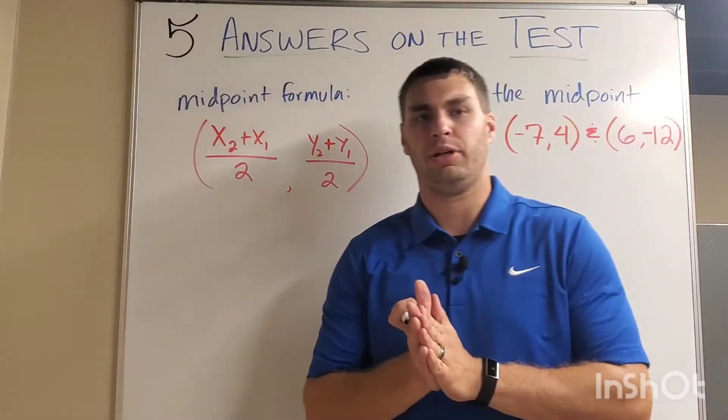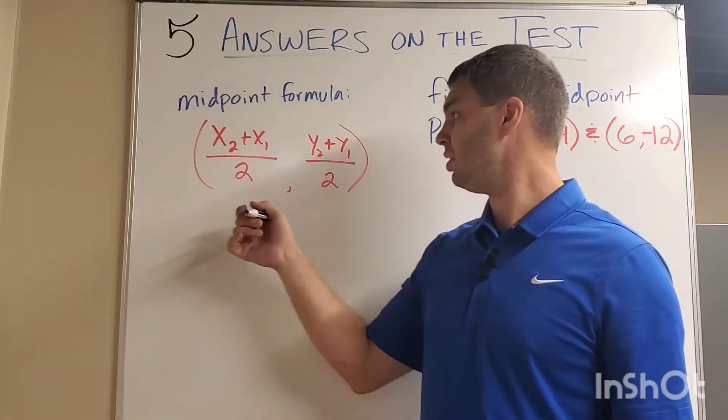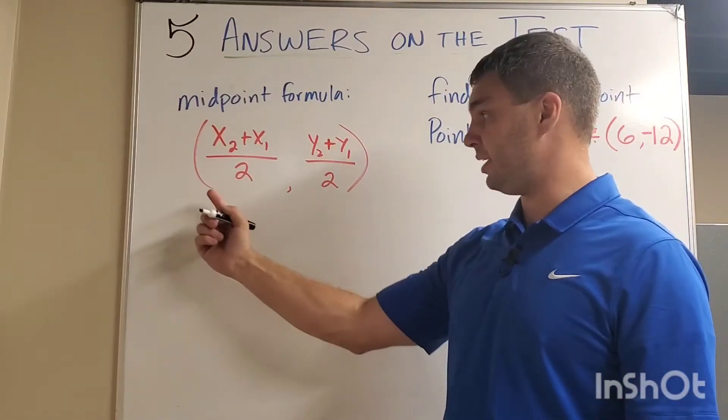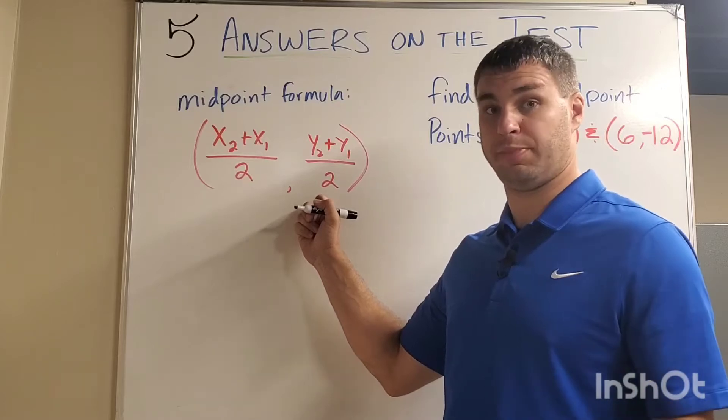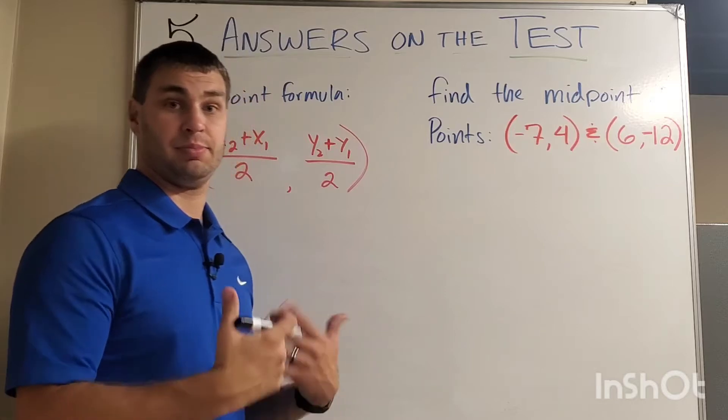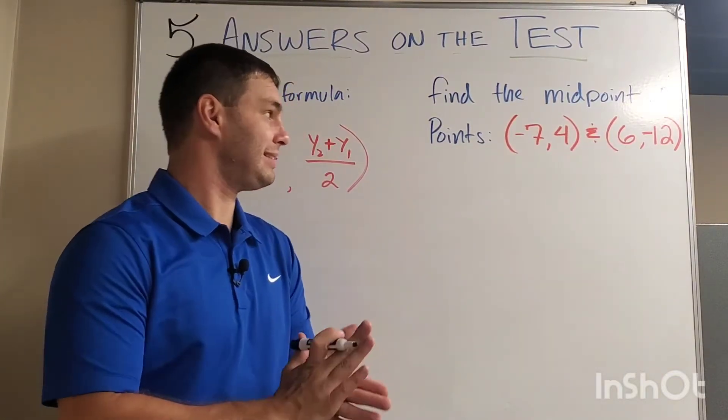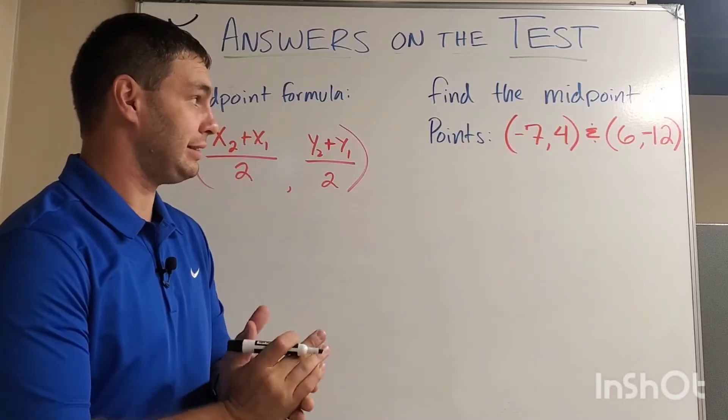Moving on to part two. Part two, we're talking midpoint formula. Here we have our midpoint formula over here. X2 plus X1 over 2. Comma, right? This is my X values. This is my Y values. It's an ordered pair. Comma Y2 plus Y1 over 2. Or in other words, your average of your X's plus your average of your Y's. Our question says, find the midpoint of points negative 7, 4 and 6, negative 12.